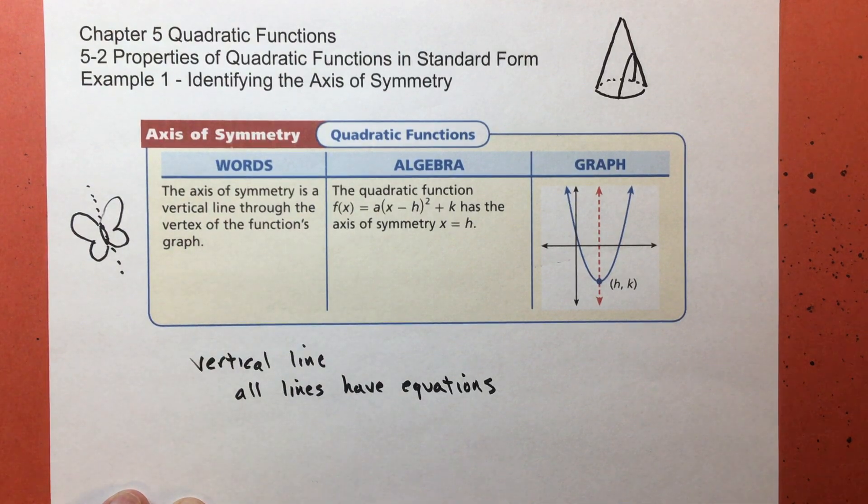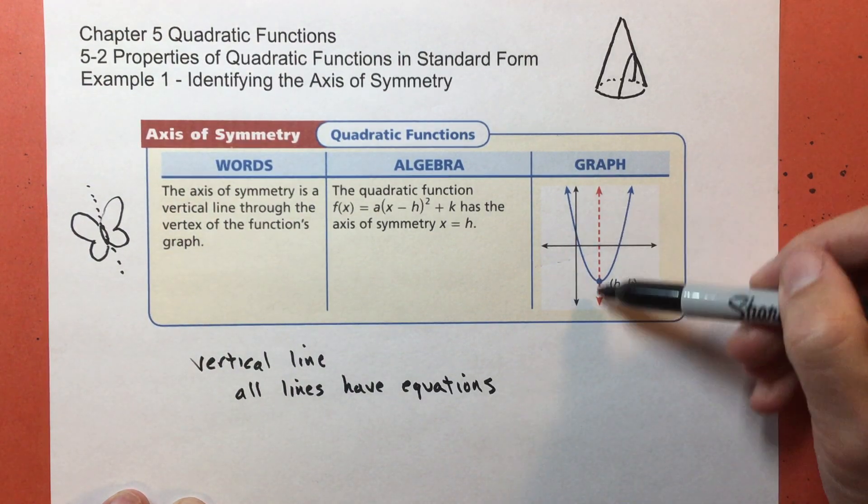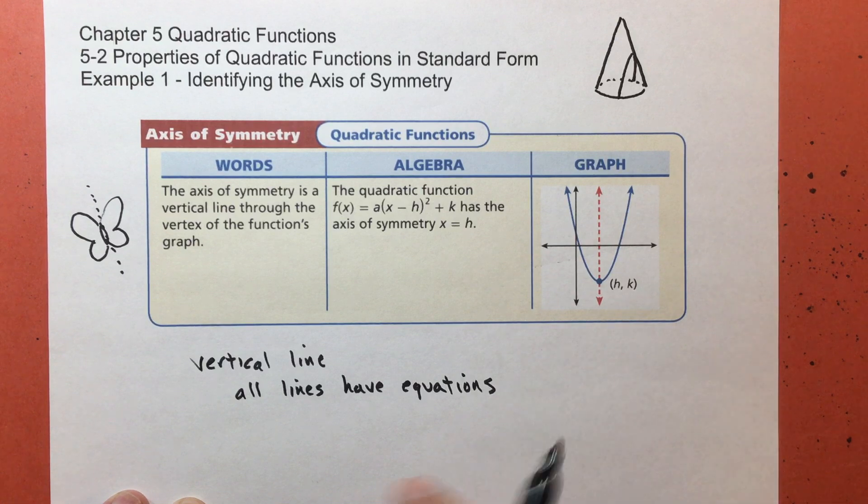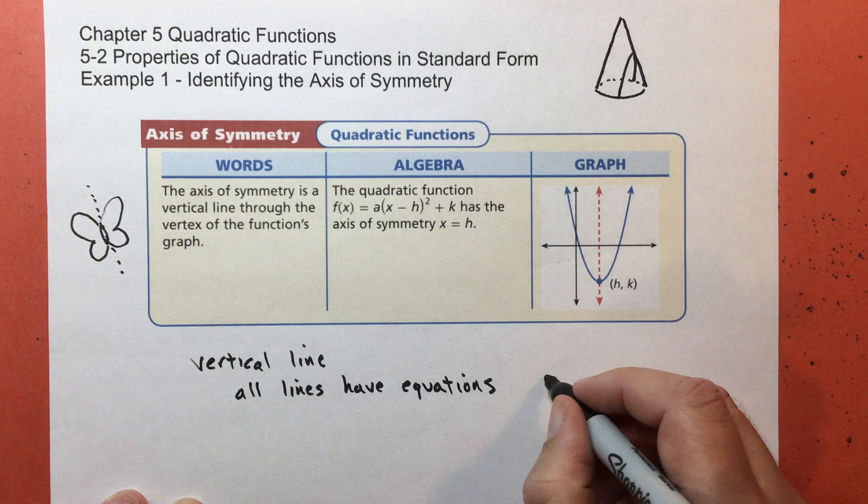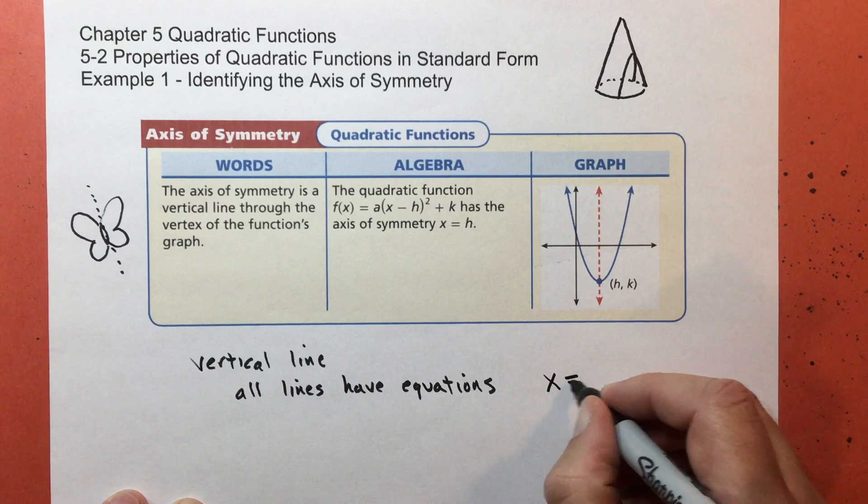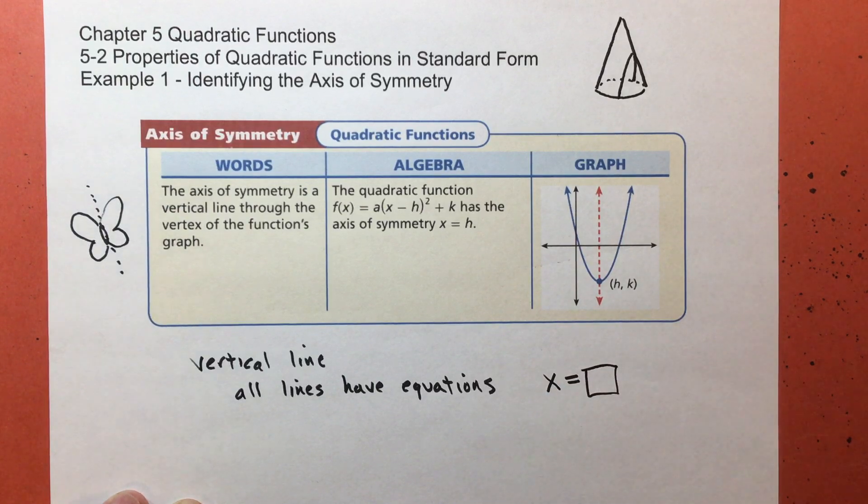Now, vertical lines all have the same x value. So each vertical line, no matter whether it's an axis of symmetry or just a vertical line, all of them start like this: x equals, and then we put some number in there.